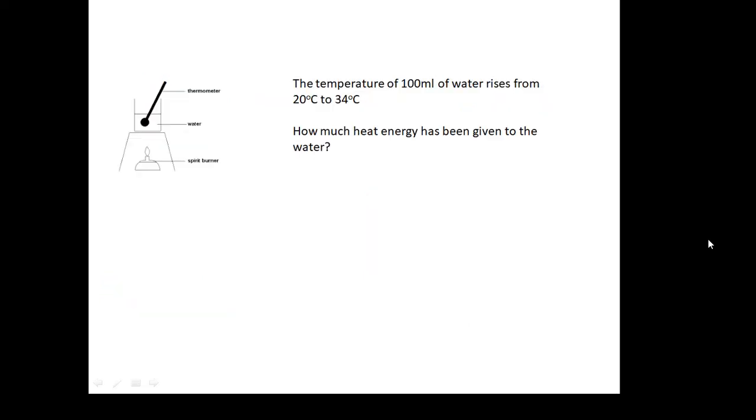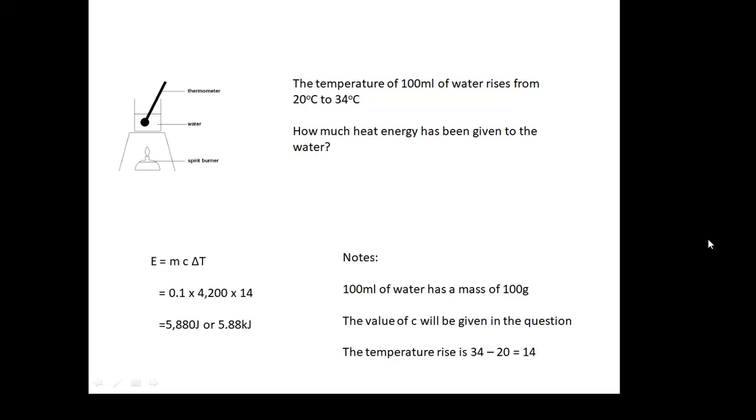Here's an example. The temperature of 100 mils of water rises from 20 degrees to 34 degrees centigrade. How much heat energy has been given to the water? E equals MC delta T. I'm doing the mass in kilograms. So 100 mils is 100 grams, it's 0.1 kilograms. So I'm using 4,200 for the specific heat capacity. And my temperature rise is 14. So my answer is 5,880 joules or 5.88 kilojoules. 100 mils of water is 100 grams, is 0.1 kilograms. The value of C you'll be given in the question. And then the temperature rise is 34 minus 20, which is 14.